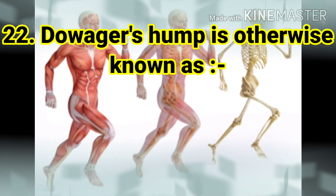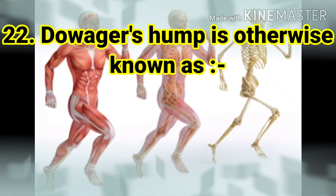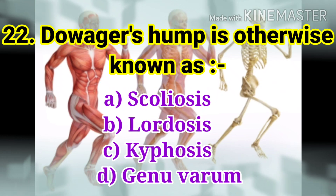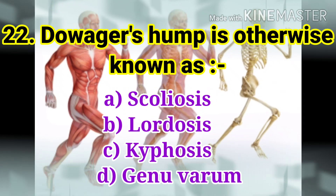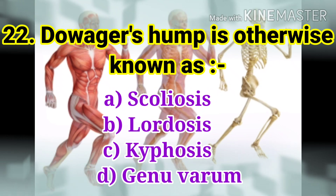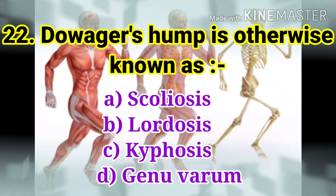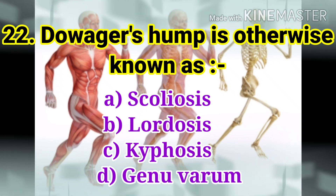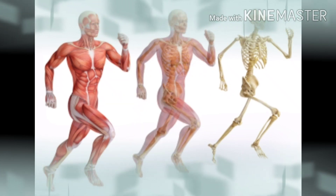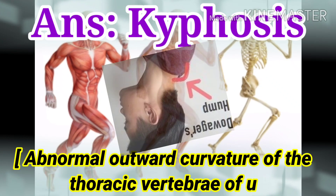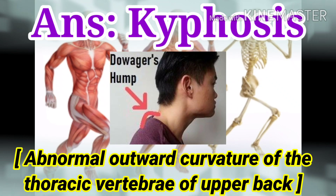The next question: Dowager's hump is otherwise known as. The options are scoliosis, lordosis, kyphosis, and genu vara. The answer is kyphosis, that is postural kyphosis.